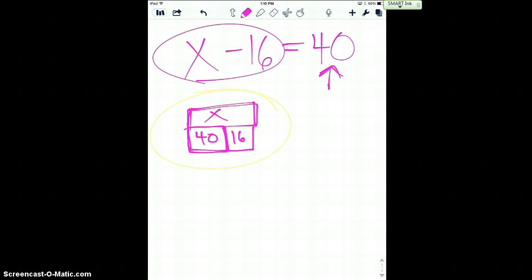40. So now based on my picture, how do I get back to what x is worth? Well, it says x is this whole thing. So that means what do I have to do with 40 and 16? I would have to add them together to end up with 56 as my solution for x.